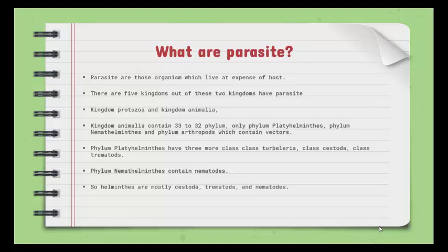Kingdom Protozoa contains protozoans which are unicellular and eukaryotic. They are found in blood and there are many types of protozoa — you can see Babesia, Trichomonas, and Leishmania. I have already made a video on Leishmania and Trichomonas. So these are the protozoa.